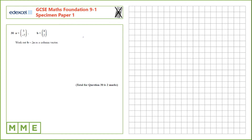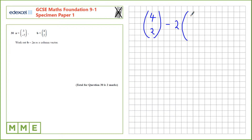Question 30. Work out B take 2A as a column vector. So let's write out this expression with the vectors instead. So, 4, 2, take 2 lots of the vector A, 3, minus 7.